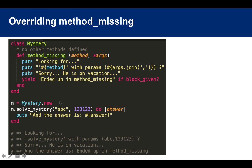So how does this actually work? You have the mystery class instance called M. You can call any method you want on it — for example, you call solveMystery, pass in parameters ABC and 123123, as well as a block where the answer is 'ended up in method_missing.' What you get back is: 'looking for solveMystery with params ABC and 123123 — sorry, he's on vacation' and 'the answer is: ended up in method_missing.'